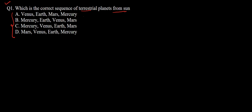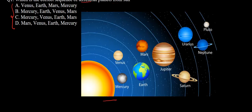So for this, first let us bring our solar system here. So here you can see our solar system, where we have the Sun, and then our first planet is Mercury, then Venus, then Earth, Mars, Jupiter, Saturn, Uranus, Neptune, and Pluto.